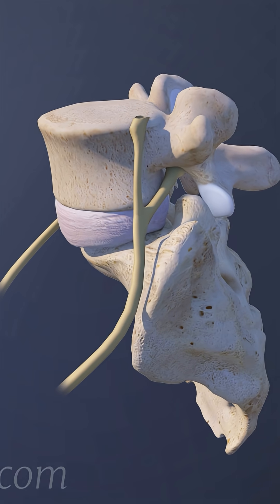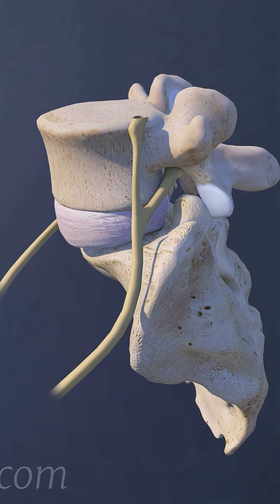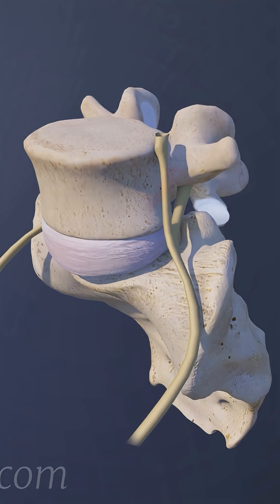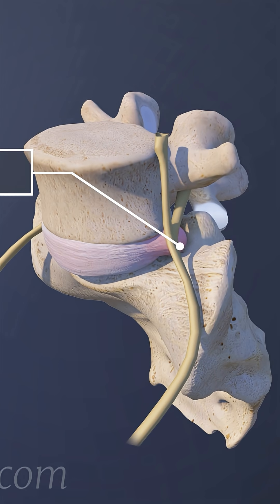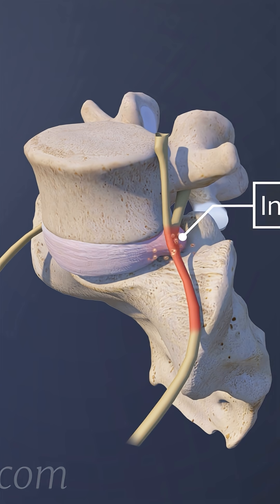L5-S1 Degenerative Disc Disease causes pain through inflammation of the L5 spinal nerve. When the outer part of a disc breaks down, the inner portion of the disc can leak out or herniate and release inflammatory proteins that irritate the L5 nerve.